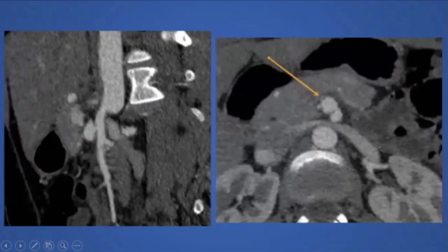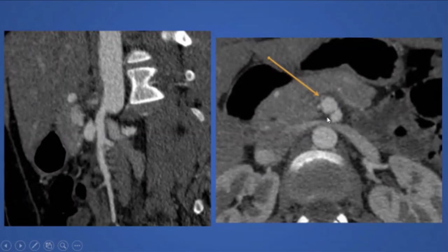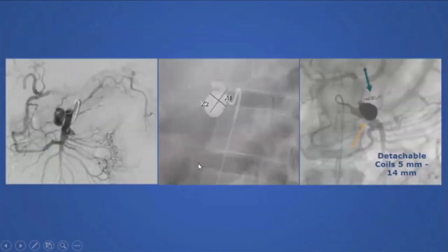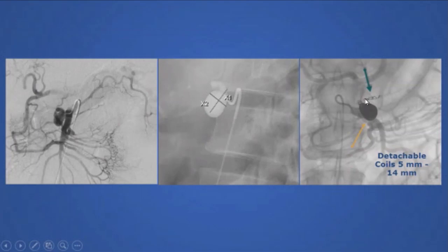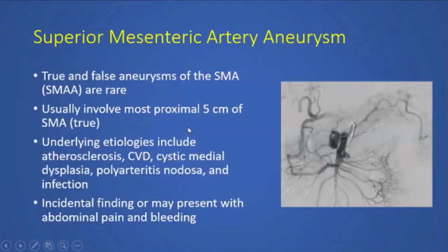The next patient is a 43-year-old male with abdominal pain. Curved reformatted images show an abnormal outpouching of the SMA — an SMA pseudoaneurysm secondary to pancreatitis. Angiogram confirmed the size and we deployed detachable coils into the sac and a possible outflow vessel. Superior mesenteric artery aneurysms usually involve the most proximal five centimeters of the SMA, and may be incidental or present with abdominal pain and bleeding. There is no real size criteria — all should be treated due to rupture risk.